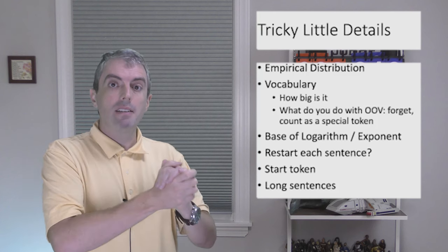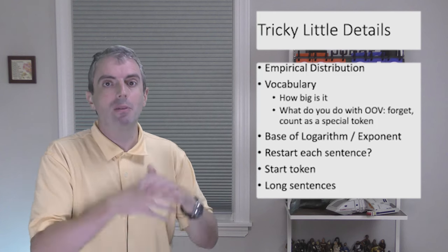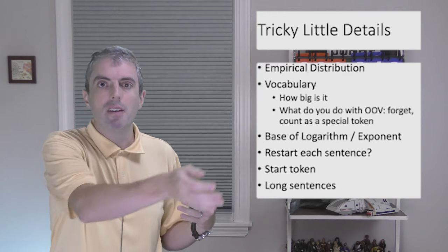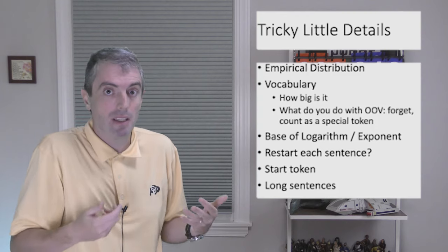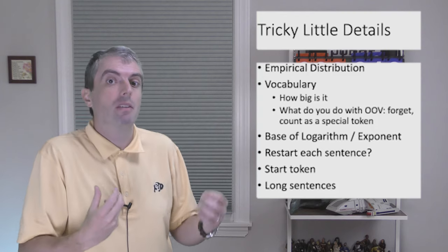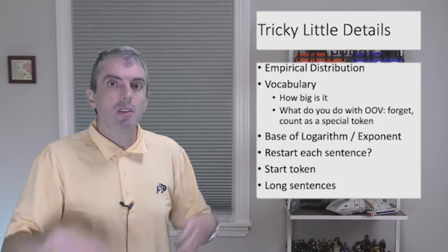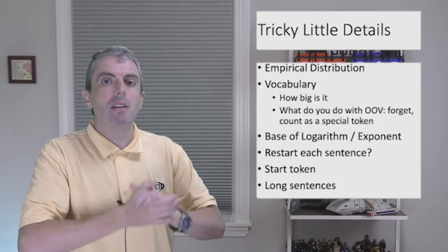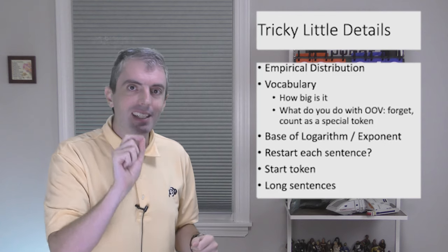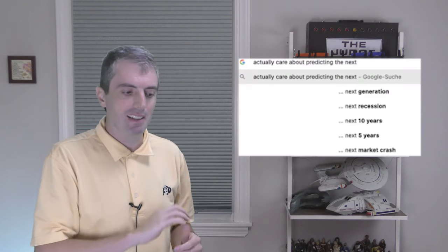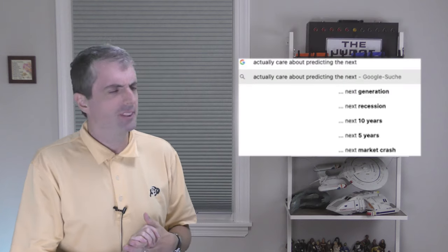Finally, some sentences are too long for a language model. What do you do with them? Throw them out? Truncate them? Give them the lowest possible score? These long sentences are infrequent, but they can make a big difference when you're comparing language models. So when you go out and try to use a language model, be safe and informed, and only use perplexity if you actually care about predicting the next generation.